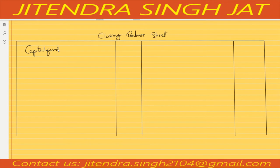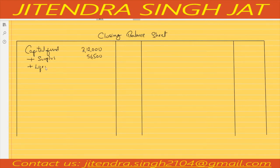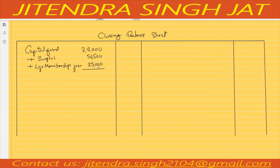Starting the closing Balance Sheet with the liability side. Capital Fund is 3,12,000. Adding surplus of 56,500 and life membership fees of 25,000 gives a total of 3,93,500 on the liability side.